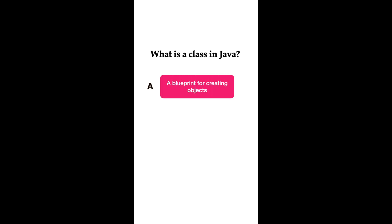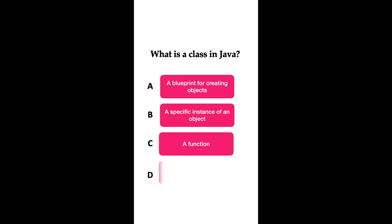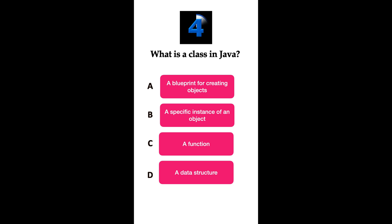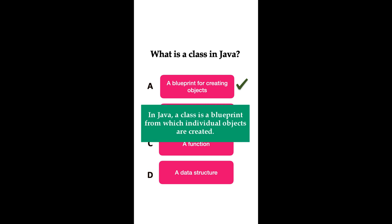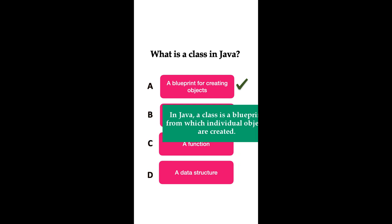Welcome to Java Quiz Series. Here is one question: What is a class in Java? Option A: a blueprint for creating objects. Option B: a specific instance of a class. Option C: a function. Option D: a data structure. You have five seconds to answer. The correct answer is option A. In Java, a class is a blueprint or template from which individual objects are created.